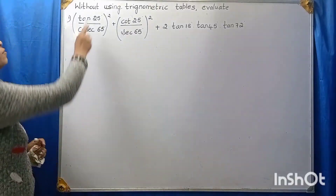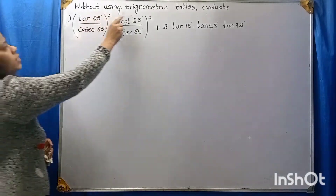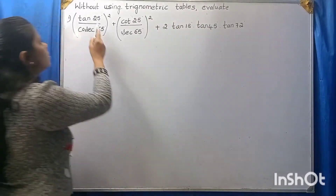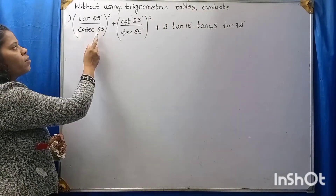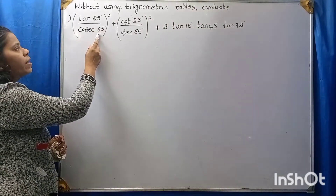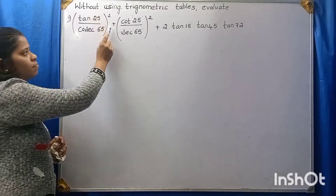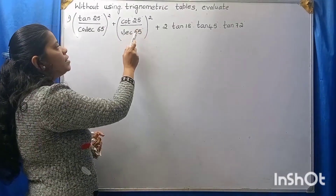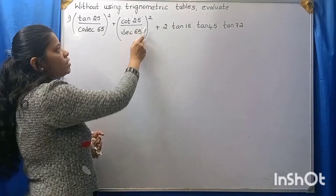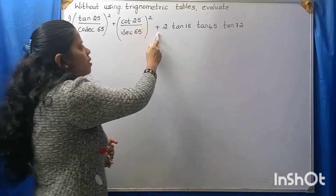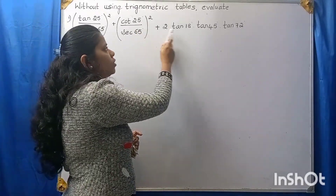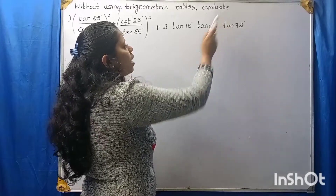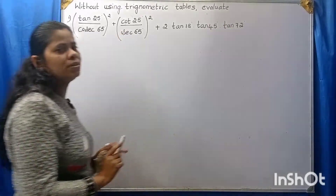Let's solve the problem without using trigonometric tables. Evaluate: tan 25° divided by cosecant 65°, the whole square, plus cot 25° divided by secant 65°, the whole square, plus 2 into tan 18° into tan 45° into tan 72°.